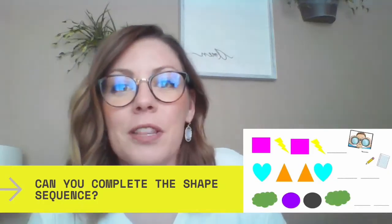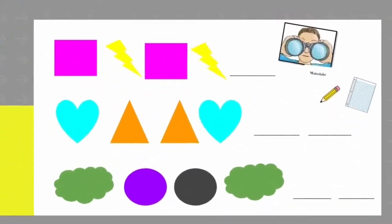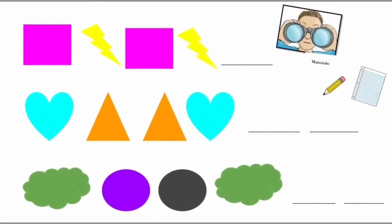So let's get warmed up with this shape sequence right here. Can you complete this shape sequence? I would suggest that you pause — this is a good point to pause so that you can take a look and spy any patterns that you see. You can use your pencil and paper, even some crayons or markers or colored pencils to complete this shape pattern.